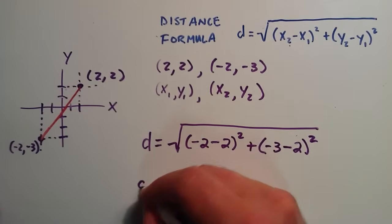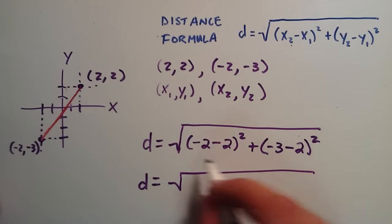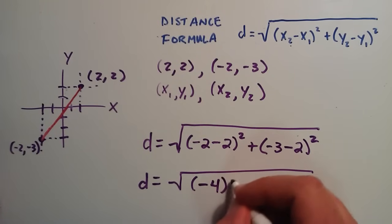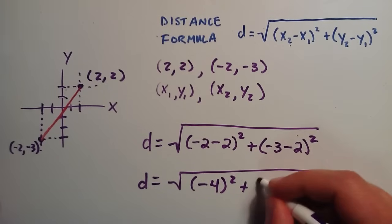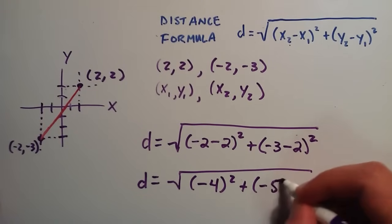So the distance between those two points is simply the square root of negative 2 minus 2 squared, and negative 2 take away another 2 is negative 4 squared, plus negative 3 minus 2, which is negative 5 squared.